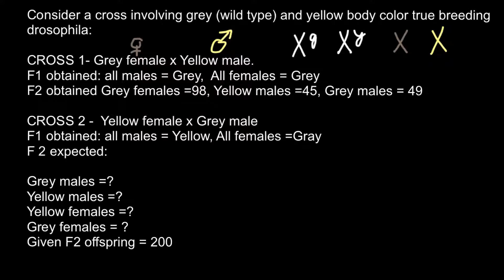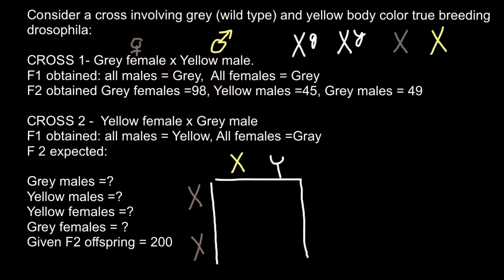We're told we cross a gray female with a yellow male in this first cross. I'll put the phenotype and genotype of the female on the side of the Punnett square and the male genotype on top. The Y chromosome doesn't contain any genes that code for this trait. Also important: wild type gray is dominant over yellow, since yellow is a mutant and wild type is what we find in nature.